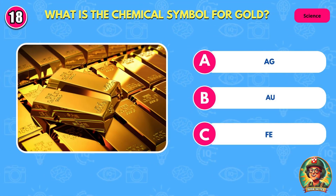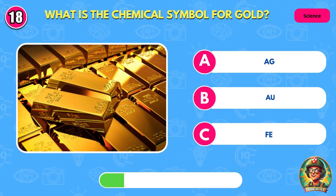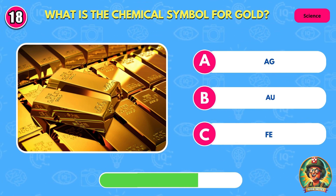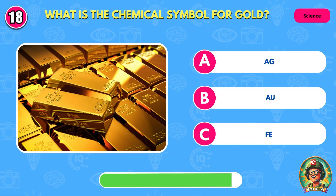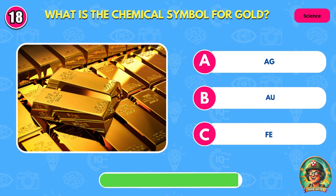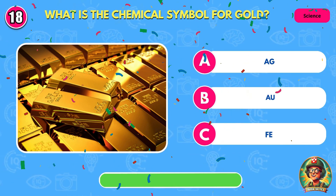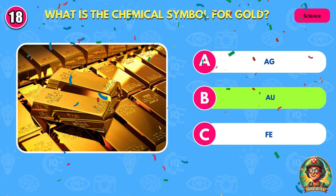What is the chemical symbol for gold? That's right. It's Au.